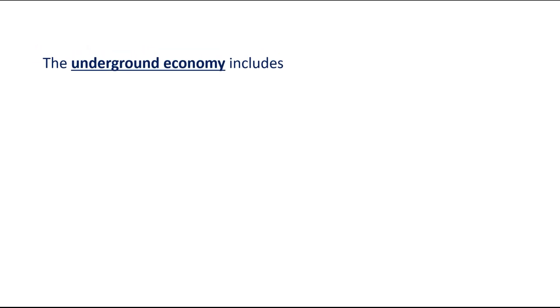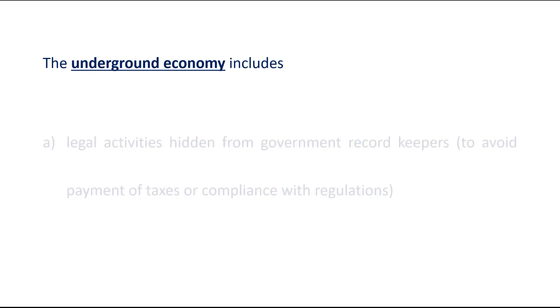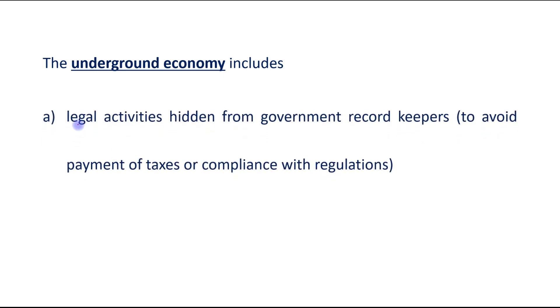The underground economy includes two things. First, legal activities which are hidden from government record keepers — for example, to avoid the payment of taxes or compliance with regulations.